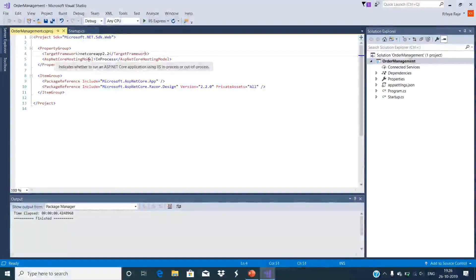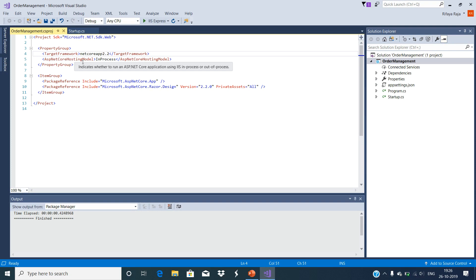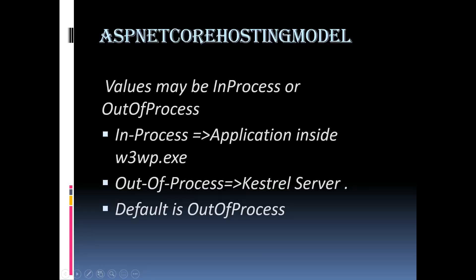The ASP.NET Core hosting model element of the project file specifies how we are going to host the ASP.NET Core application. The values are 'InProcess' or 'OutOfProcess', and it is out of process by default. 'InProcess' means hosting in the IIS web server worker process w3wp.exe, while 'OutOfProcess' means forwarding web requests to the backend ASP.NET Core app running on the .NET Core server.